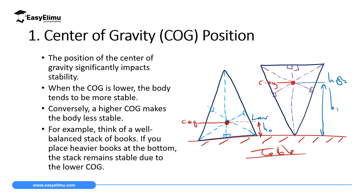If you displace the upright cone slightly, the COG will still lie within the base and the body will return to its original position. But for the inverted cone, displacing it slightly causes the center of gravity to fall outside the base, and the body topples over. You can experience this with stacked books — small books at the base with large ones on top will fall, but large books at the bottom with small ones on top are stable.